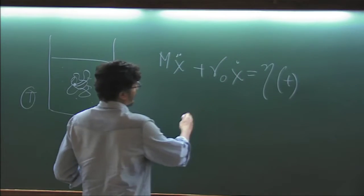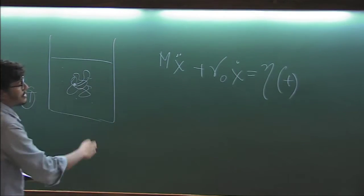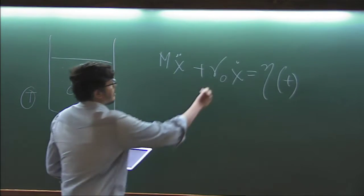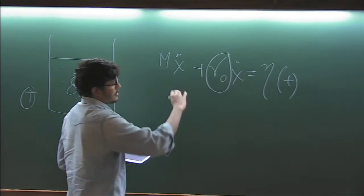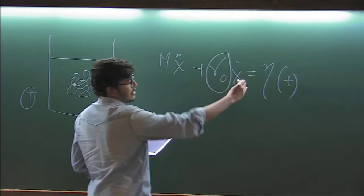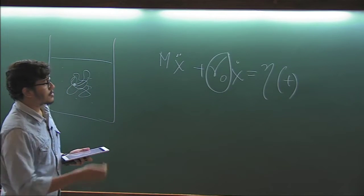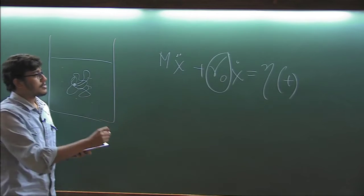So where this X represents the position of this particle and eta is the noise. And historically this is the simplest equation where this gamma naught is constant and eta is the Gaussian noise with delta correlated. So this model, this equation is Markov.